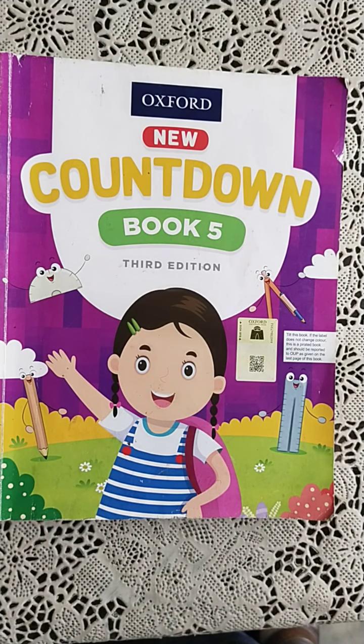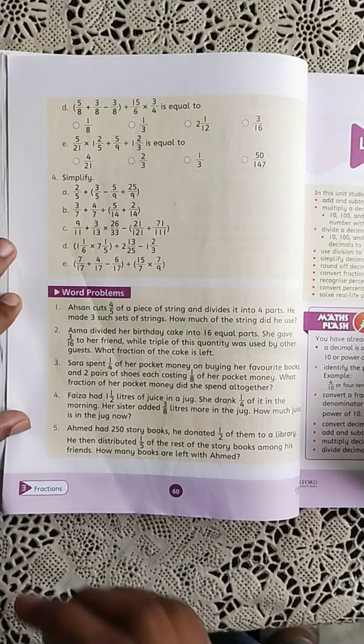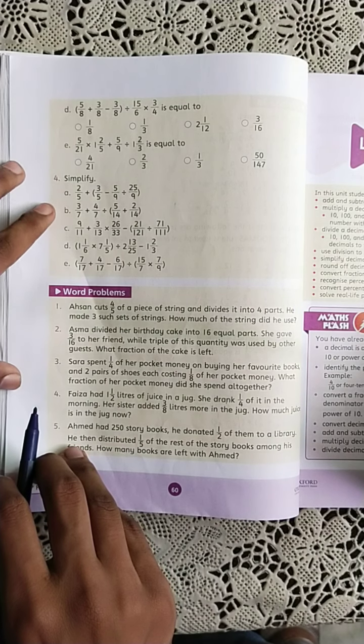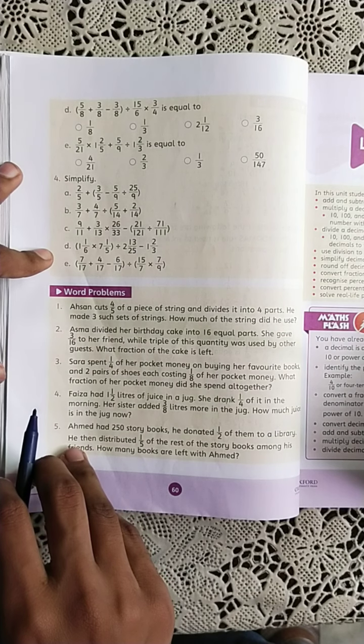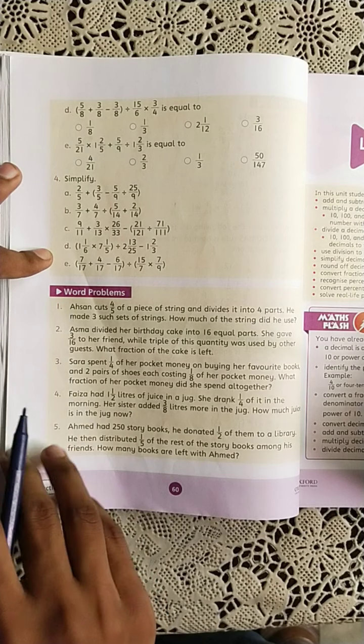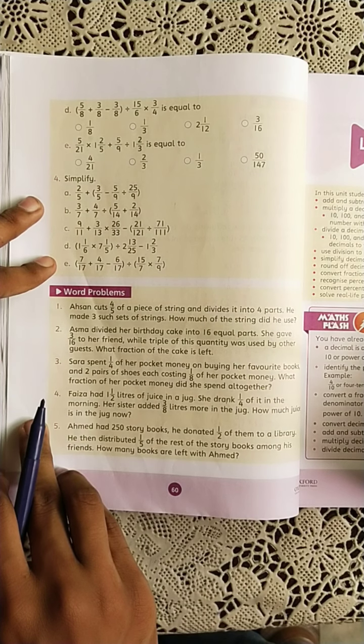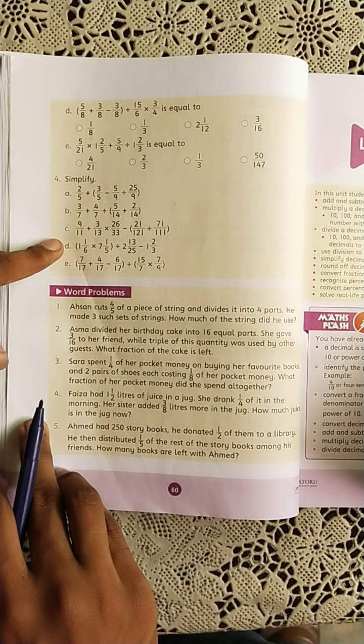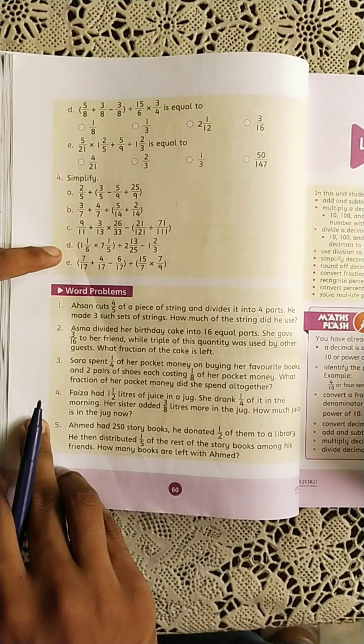Okay, so let's move to exercise 3d. Students, this is question number 4 of exercise 3d: simplify. So we have to simplify this question according to the BODMAS rule. We will select mixed fractions and solve them as is.